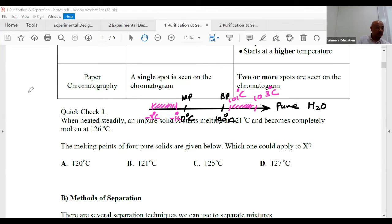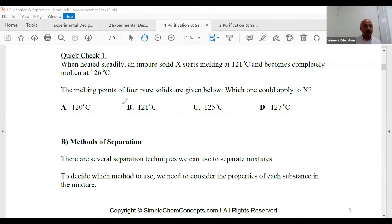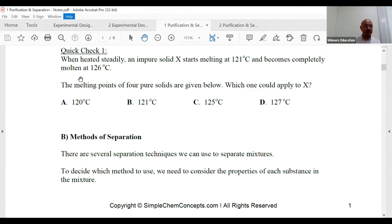All right, without further ado, ladies and gentlemen, I have one simple MCQ for you to play. All right, what's the actual answer? Take a look at the question. And again, I'm going to use the number line. All right, when heated steadily, an impure solid - impure, what color did they use just now? I use pink.